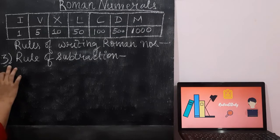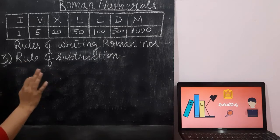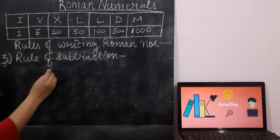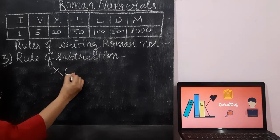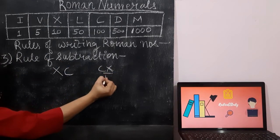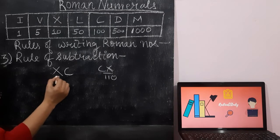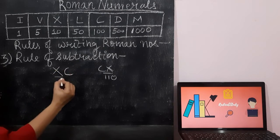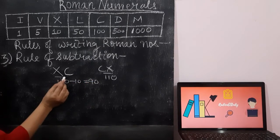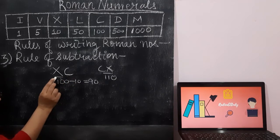Now I will explain the third rule, which is the rule of subtraction. Whenever a smaller Roman numeral is written on the left side of a greater Roman numeral, then we subtract. For example, XC: when it was CX, X was on the right side and was added, giving 110. Now X is on the left side, so it is subtracted: 100 minus 10 equals 90.